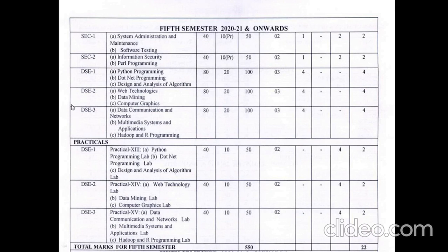For practicals in the fifth semester: DSE1 Practical Paper 13 is based on whichever theory subject you selected in DSE1 — 50 marks (40 external, 10 internal). DSE2 Practical Paper 14 is based on your chosen DSE2 subject, for example Web Technology Lab — 50 marks (40 external, 10 internal). DSE3 Practical Paper 15 is similarly based on your chosen subject — 50 marks (40 external, 10 internal). Total fifth semester marks are 550 and 22 credits.